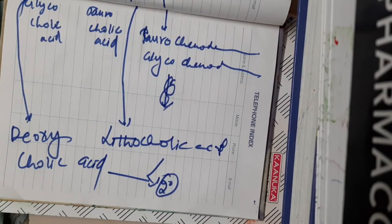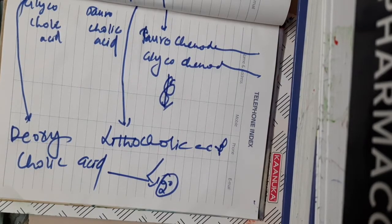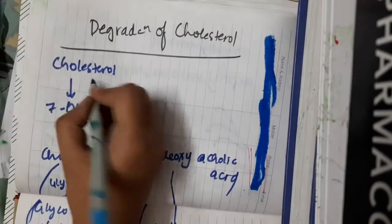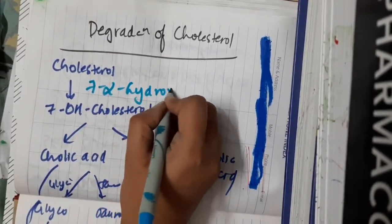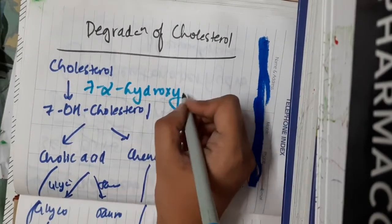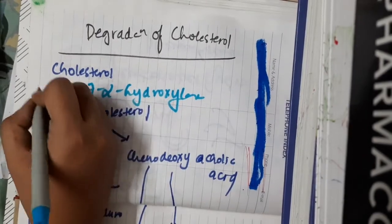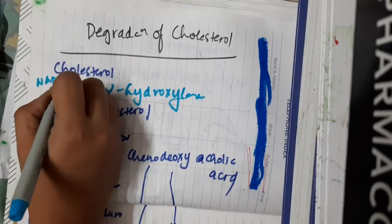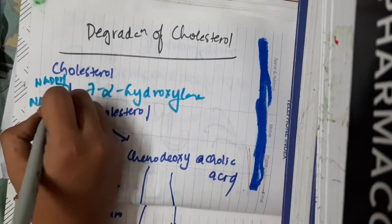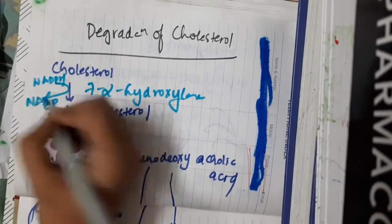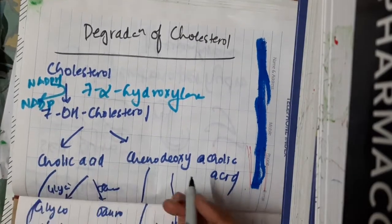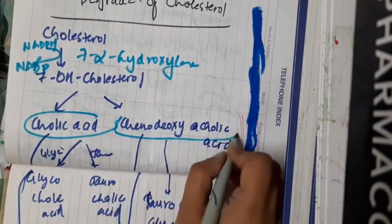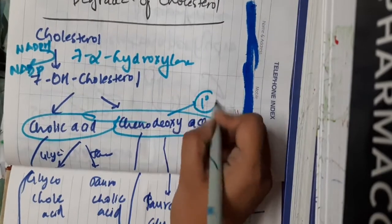Now we will introduce the enzymes. Cholesterol in the presence of 7-alpha-hydroxylase forms 7-hydroxycholesterol, and during this process NADPH gets converted to NADP. The 7-hydroxycholesterol will form cholic acid and chenodeoxycholic acid, which are the primary bile acids.